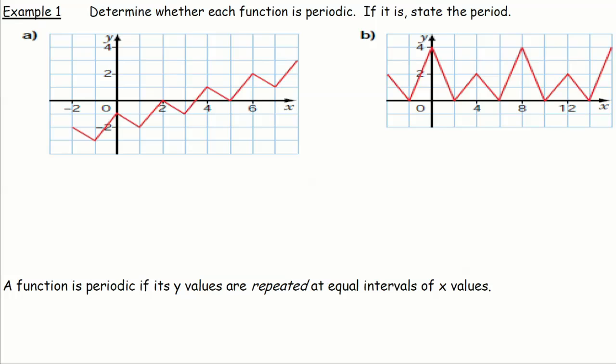In example one, we want to determine whether each function is periodic and, if so, state the period. In a periodic function we're looking for a repeated pattern of y-values. Starting at the beginning of the graph, my y-value is negative two. I cycle through and end up at y equals negative two — one cycle complete. But continuing, instead of returning to negative two, the values become one, zero, one — I never get back to negative two. Because the pattern of y-values is not repeated, this is not a periodic function.